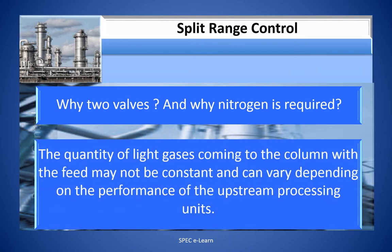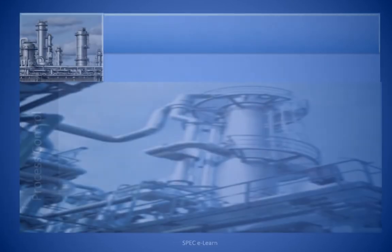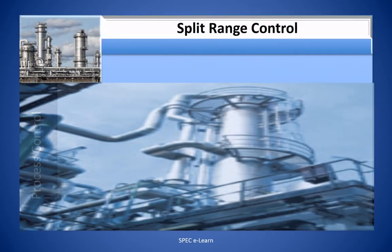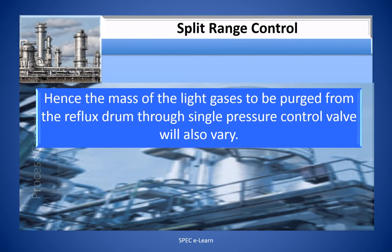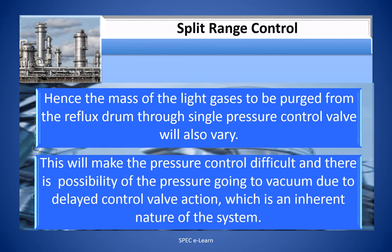The quantity of light gases coming into the column along with the feed may not be constant and can vary depending on the performance of the upstream processing units. Hence, the mass of the light gases to be purged from the reflux drum through a single pressure control valve will also vary. This makes pressure control difficult, with a possibility of pressure going into vacuum due to delayed control valve action.